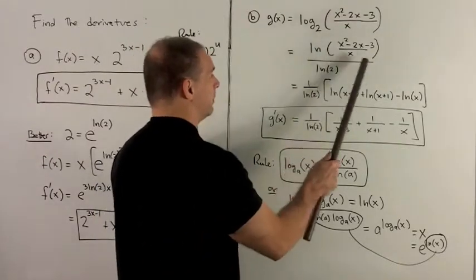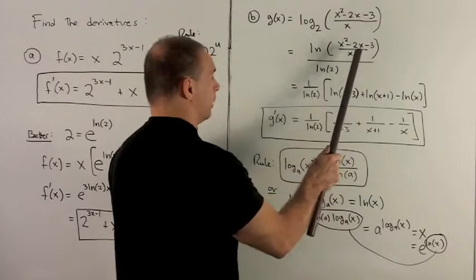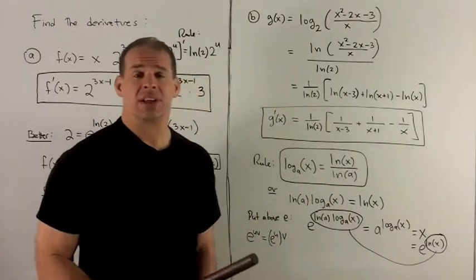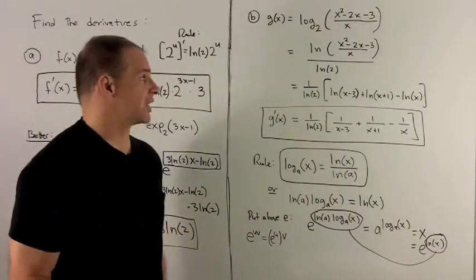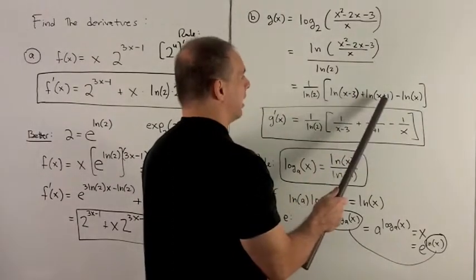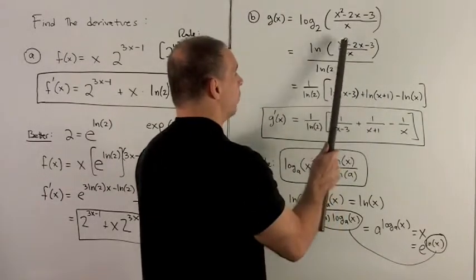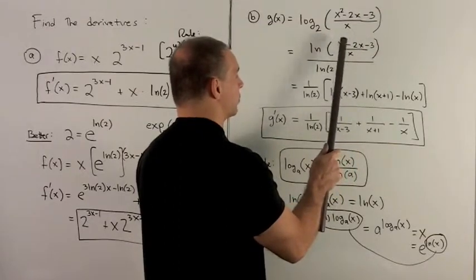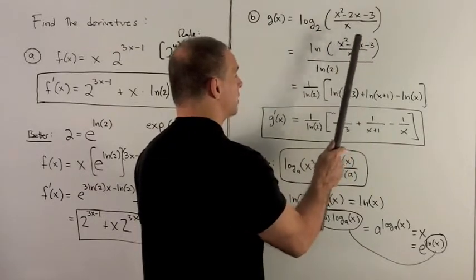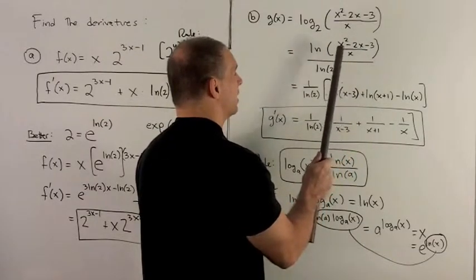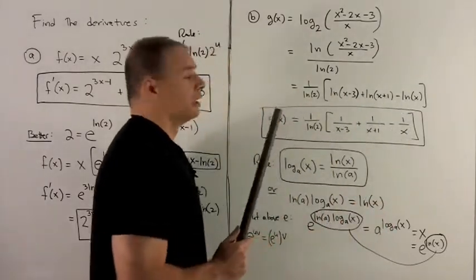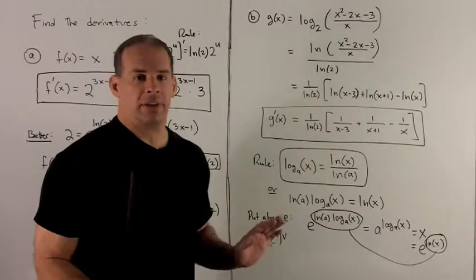Now this is great. Natural log has rules for how to deal with products and quotients on the inside. We pull them out as sums and differences on the outside. So this top part factors as x minus 3, x plus 1. So when I break this down, it's x minus 3, x plus 1 over x. So I hit a natural log with each piece. The ones on top keep positive signs. The one in the bottom picks up a minus sign. So we rewrite like this. Okay, I haven't even gone to a derivative yet, but if you notice, I've now turned this into something where the derivatives are quite nice.